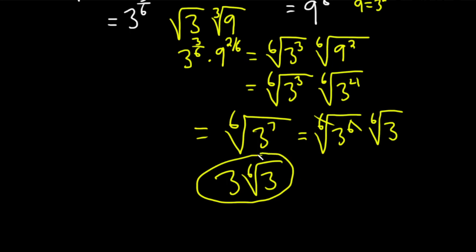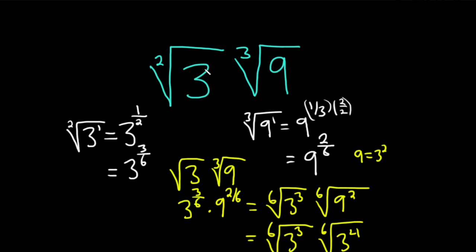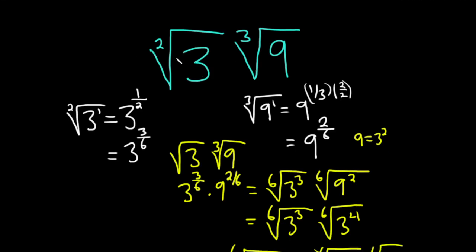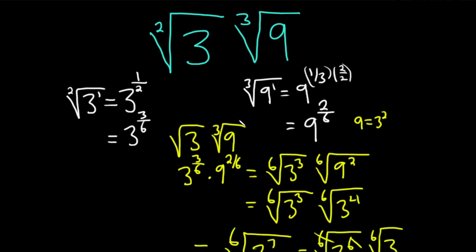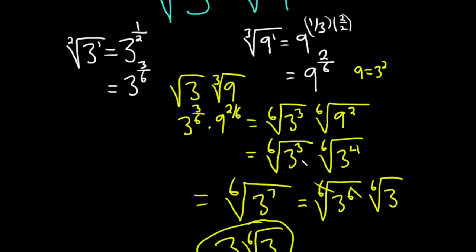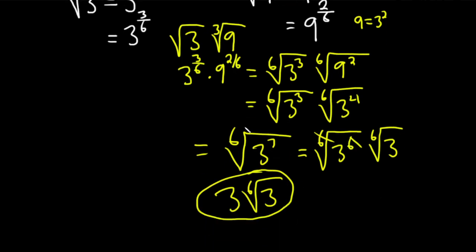Pretty cool. Went kind of quickly there, but hopefully it's made a little bit of sense. You basically have to take each of these radicals and write it as a radical that has the same number. Use the least common multiple. So two times three is six. We took our original problem and wrote it as sixth roots, multiplied through, and wrote something as power of six so we can get rid of it. That's it. Good luck.